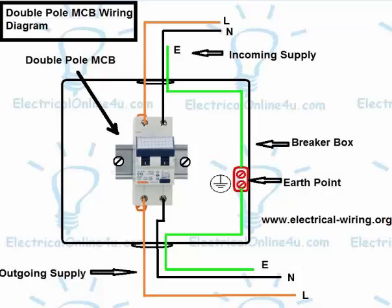Basically, a double pole MCB circuit breaker has four terminals in which two are for incoming supply and two for outgoing supply.